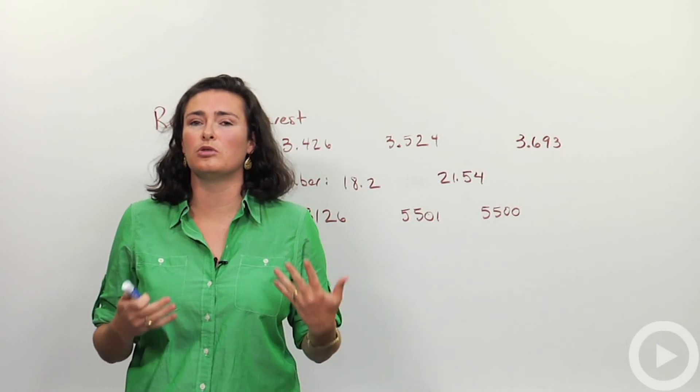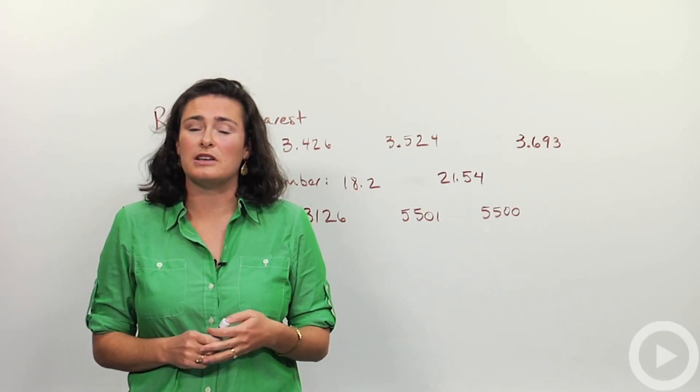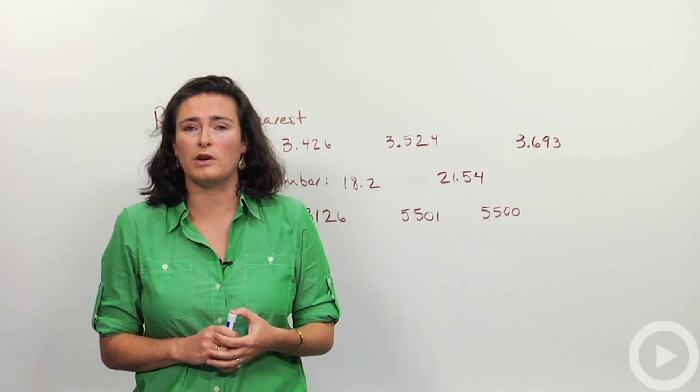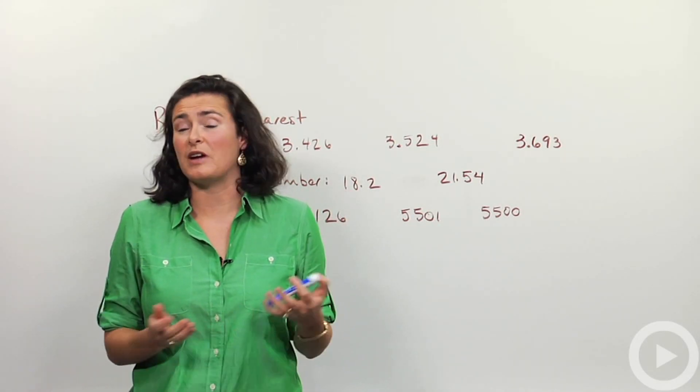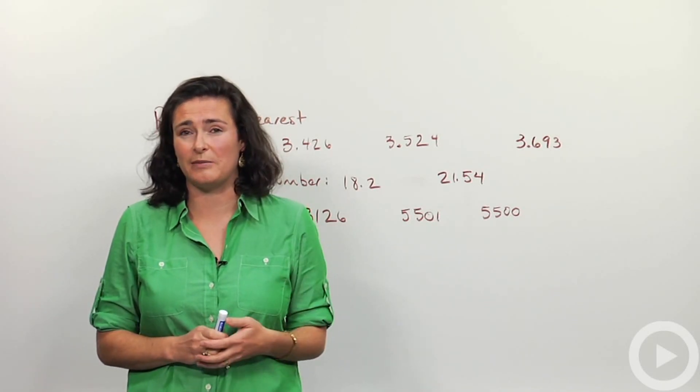There is a general rule to follow when you're rounding. That rule is if the number is five or higher, you're going to round up. And if the number is zero, one, two, three, or four, you're going to round down, or just kind of what we call truncate it, cut it off. I'll show you what we're talking about here on the board.